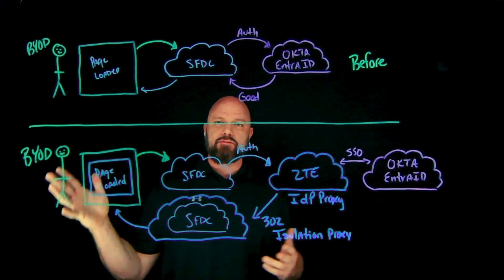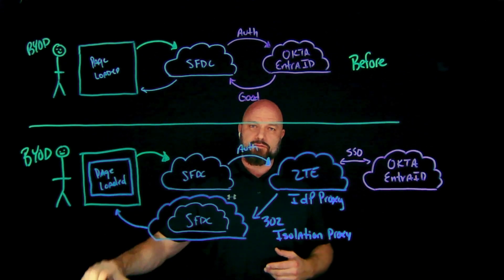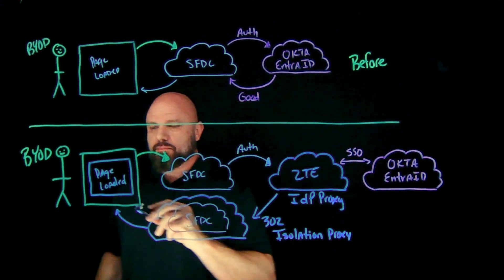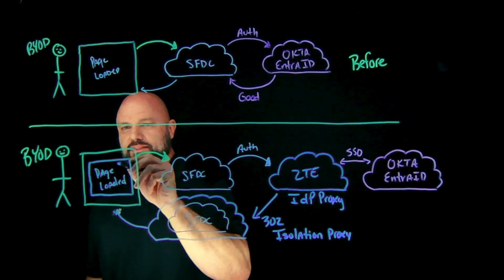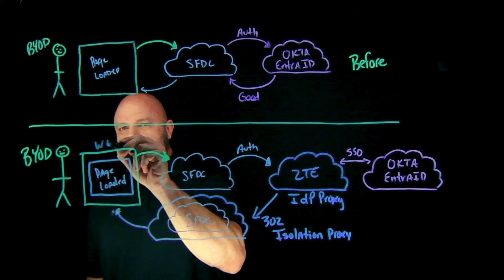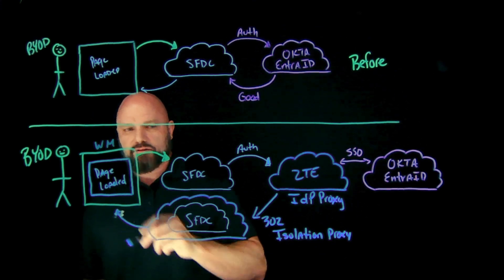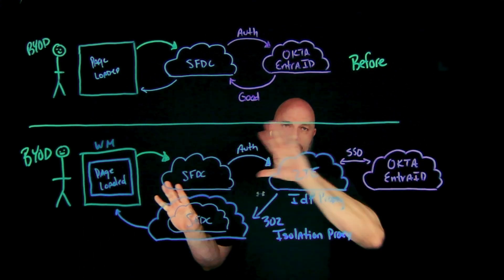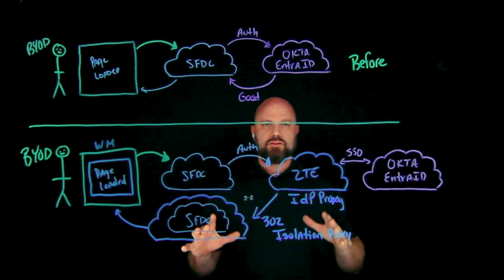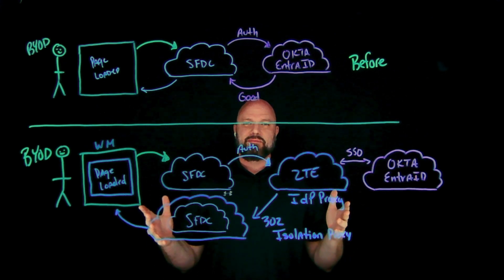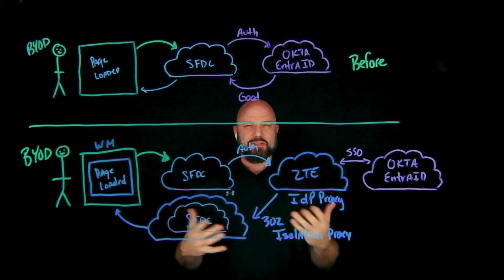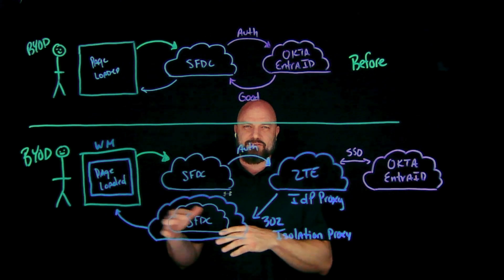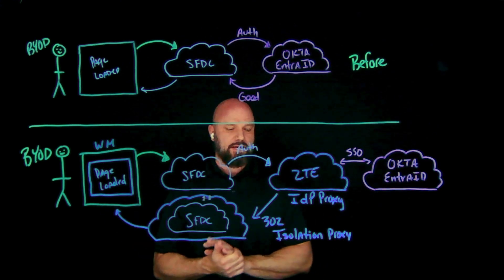Sometimes people say, 'How are you going to stop me from taking a picture with my cell phone?' Well, what I can do is watermark. By using watermarking technology, I can plaster their identity all over the file. They might look at that and think twice — do I really want to take a picture of this and share it with somebody when it has my identity on it? Probably not.